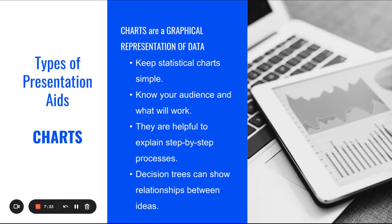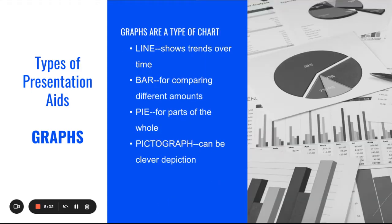Types of presentation aids. We have charts. Charts are graphical representations of data. They keep statistical charts simple. Don't make it overly complicated. Know that your audience will not have an extended period of time to analyze the information. You need it very easy for them to interpret. Know your audience and what will work for them. They're helpful to explain step-by-step processes. And decision trees can show relationships between ideas. So you can use charts to break down information for your audience to understand.